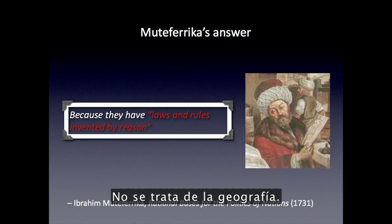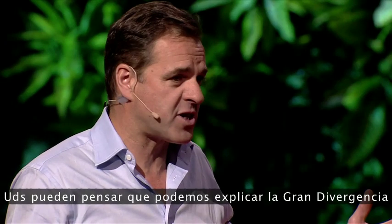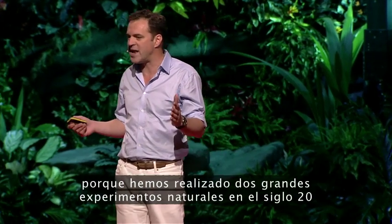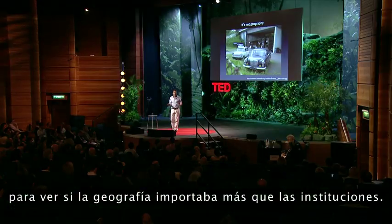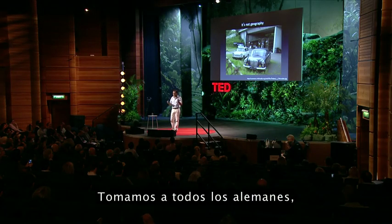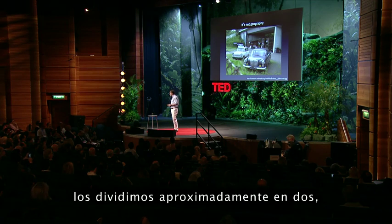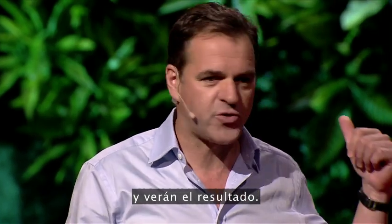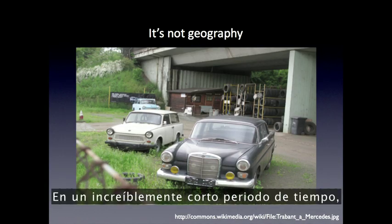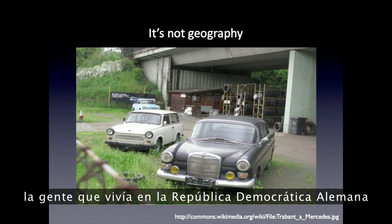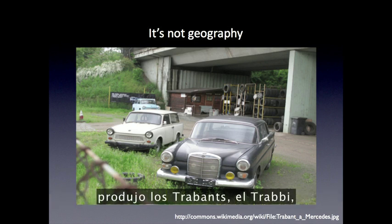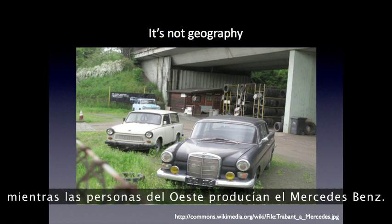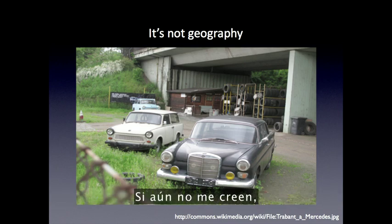It's not geography. You may think we can explain the Great Divergence in terms of geography, but we know that's wrong because we conducted two great natural experiments in the 20th century to see if geography mattered more than institutions. We took all the Germans, divided them roughly in two, and gave the ones in the East communism. Within an incredibly short period of time, people living in the German Democratic Republic produced Trabants — the Trabi, one of the world's worst ever cars — while people in the West produced the Mercedes-Benz.